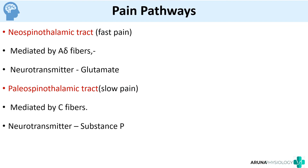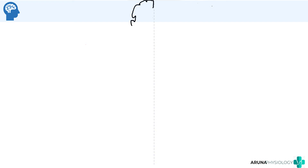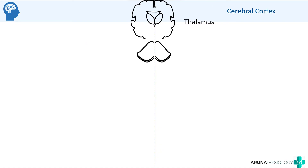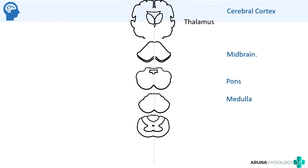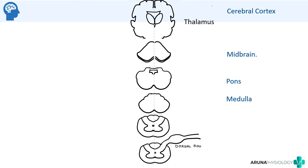Now we will see the pathway. When diagrammatically representing the lateral spinothalamic tract, you can draw cut sections at different levels of the central nervous system: the cerebral cortex with the thalamus, then outlines of midbrain, pons, medulla, and cut sections of the spinal cord at different levels — ideally cervical, thoracic, lumbar, and sacral. Suppose we have an injury on our lower limb.